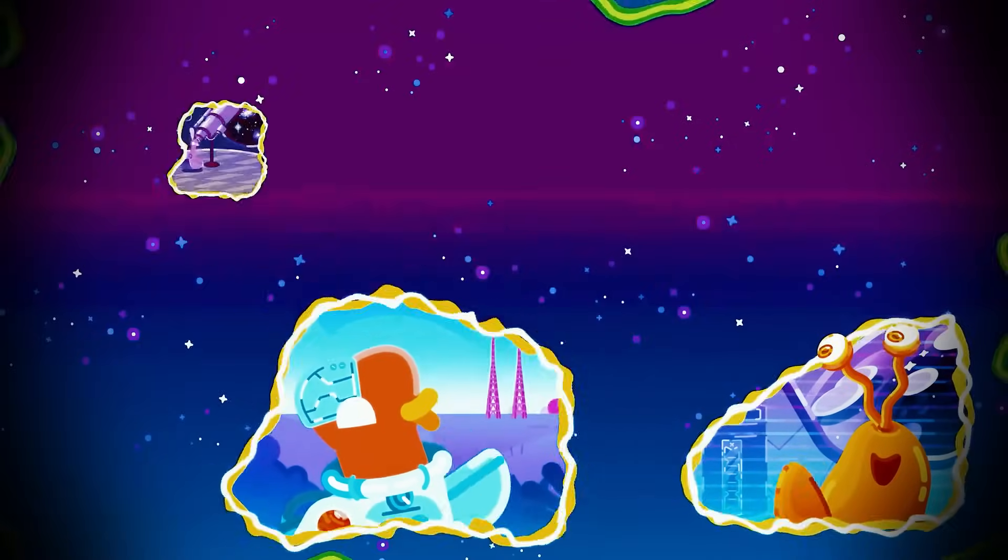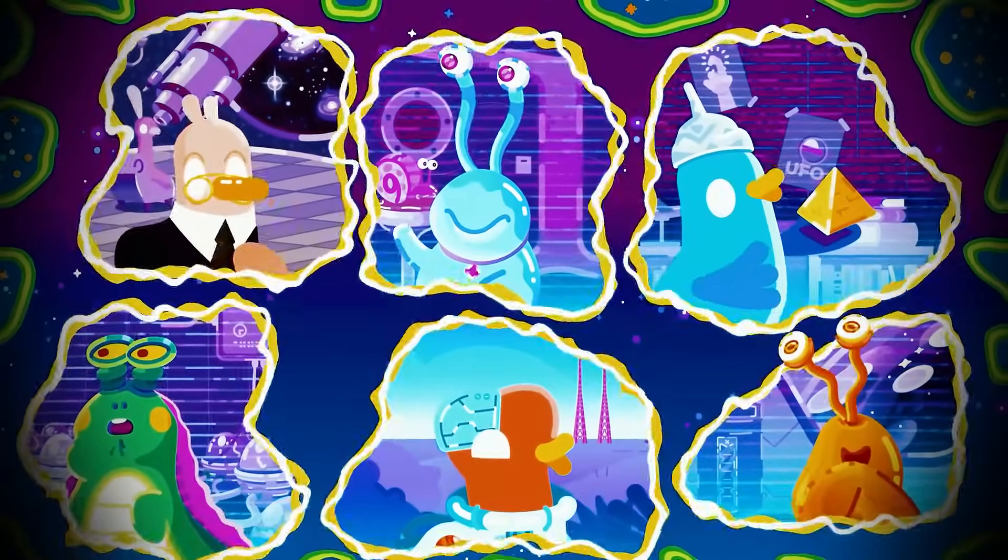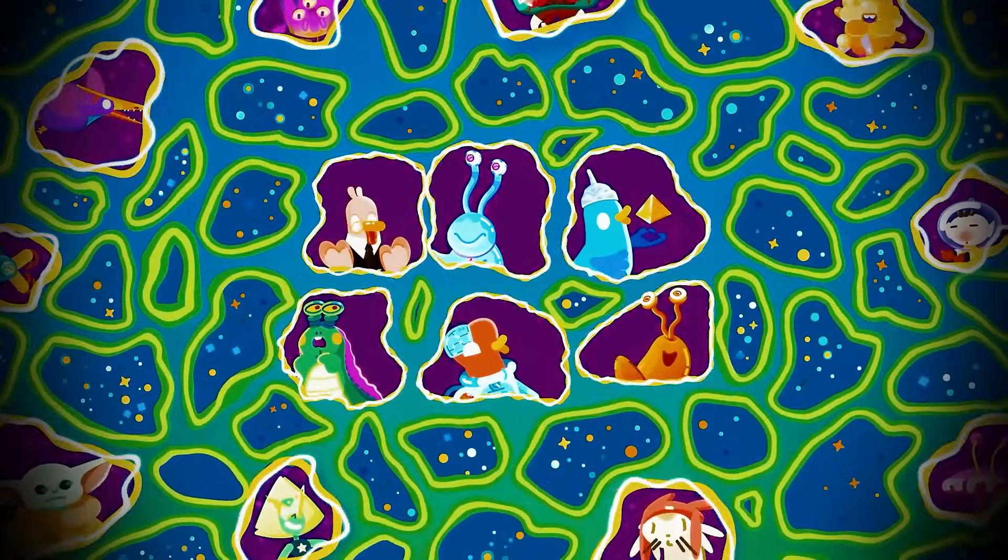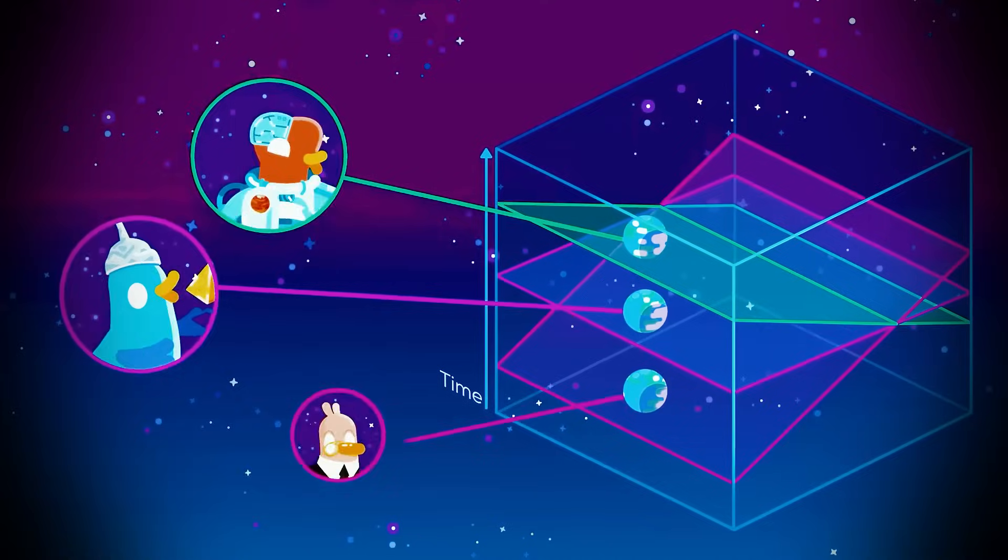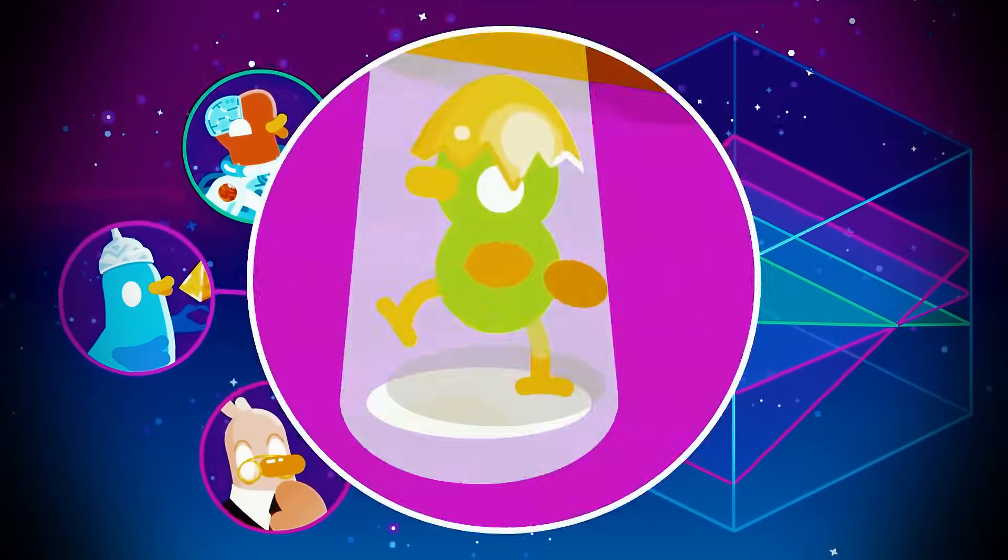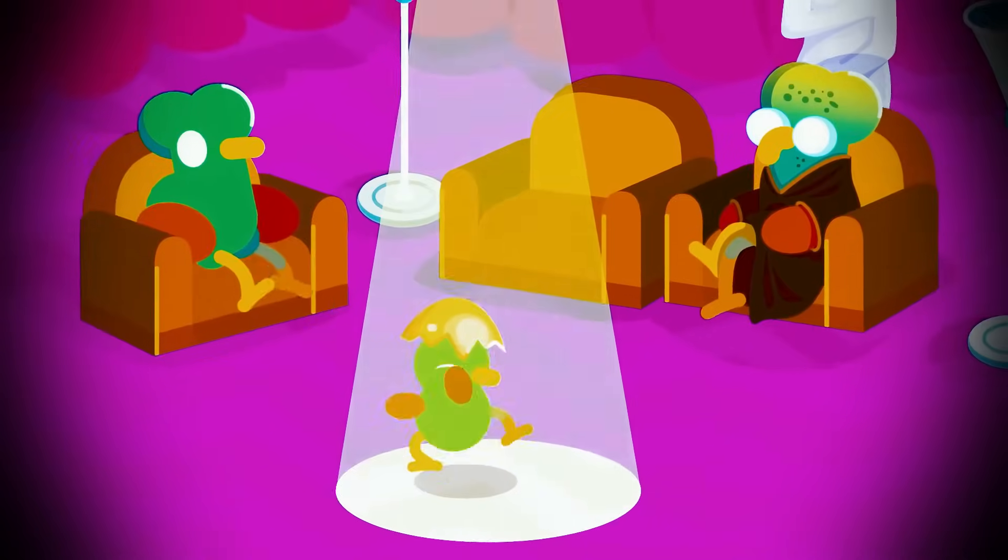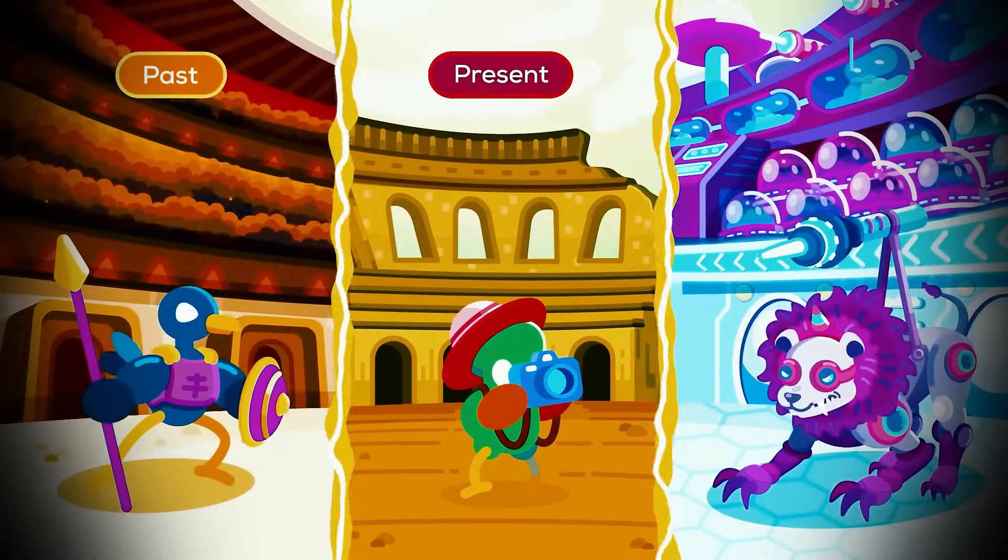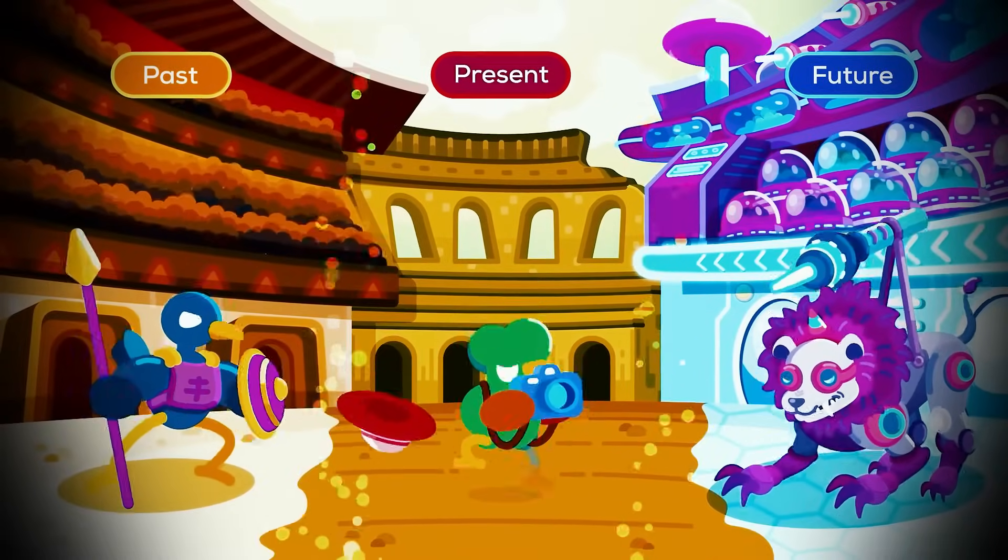Imagine you're watching a movie, but instead of scenes unfolding one after the other, every moment in the film is happening right there on the screen simultaneously. It's as if the movie is frozen, and you can see every frame all at once. That's the kind of idea the block universe hypothesis brings to the table. It is a different way of picturing time that might turn our usual thinking on its head.